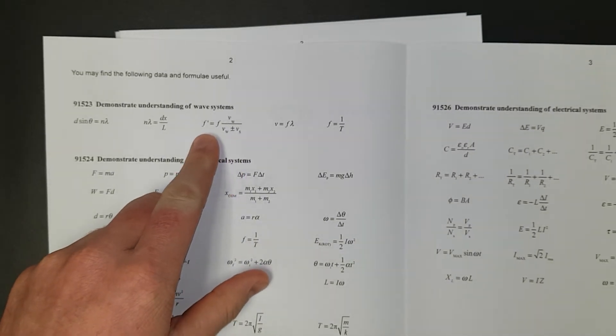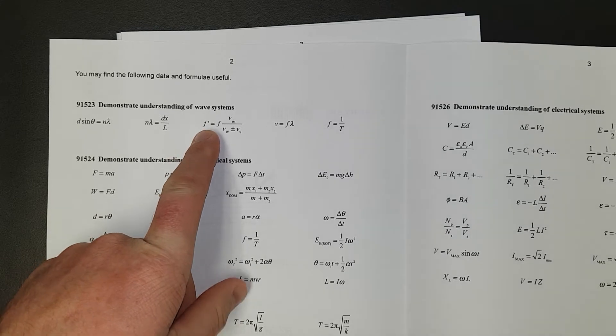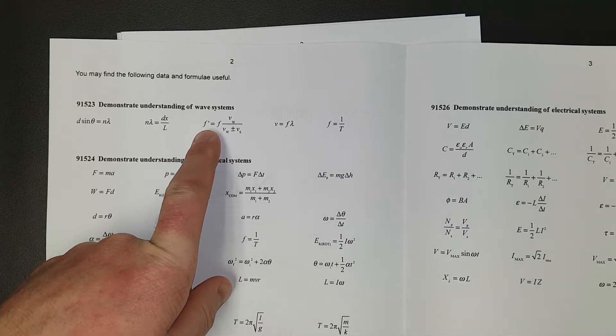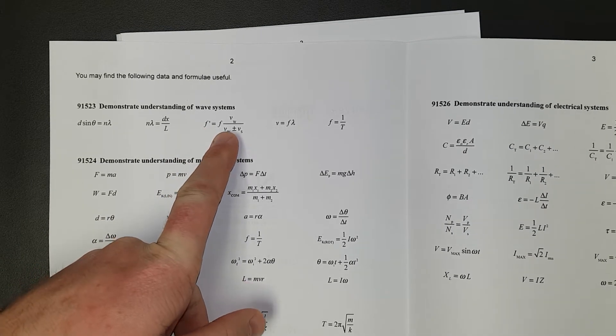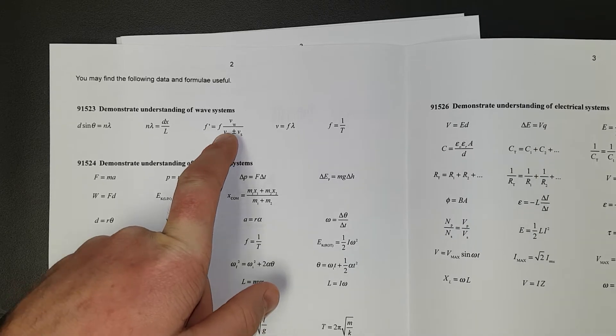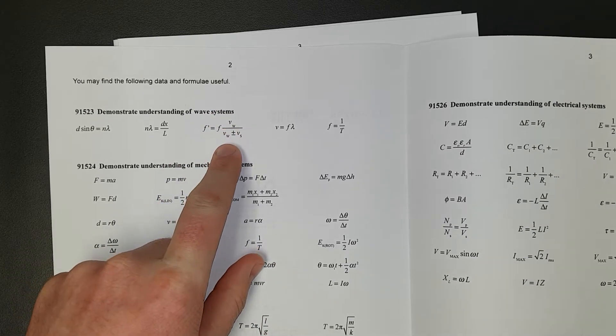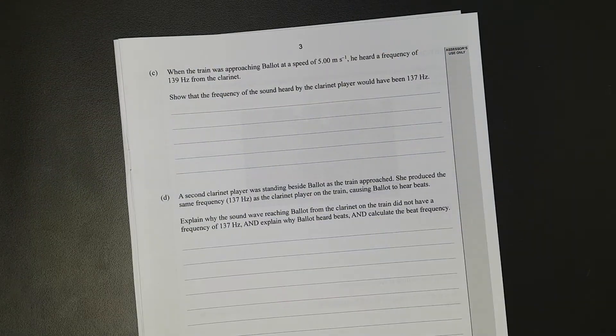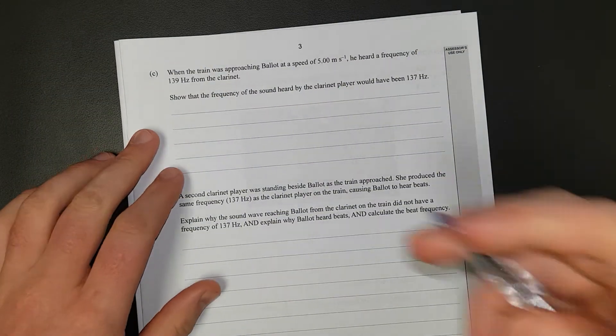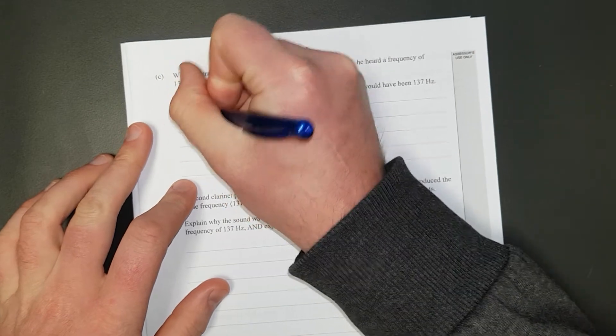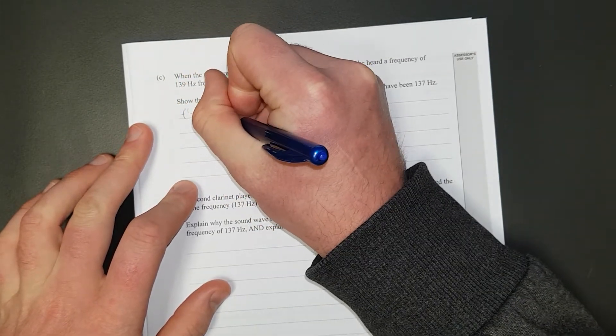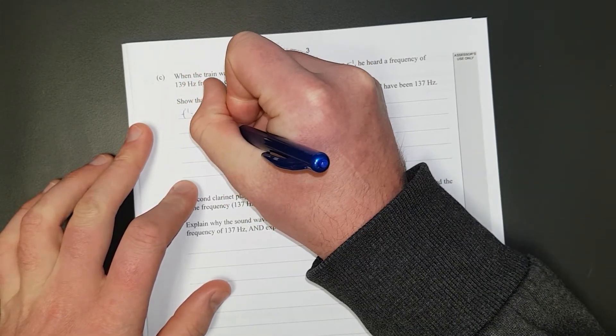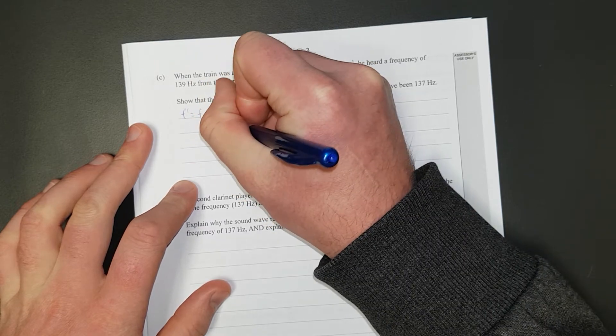Here's the Doppler formula here. So the primed frequency, or the observed frequency, is equal to the emitted frequency times the velocity of the wave divided by the velocity of the wave plus or minus the source. And the plus or minus depends on whether you're going closer or away. So we'll just write the formula out. F prime is F times V wave over V wave plus or minus V source.